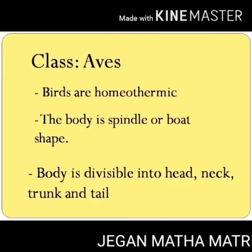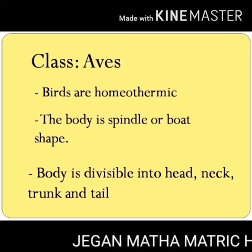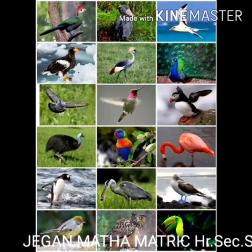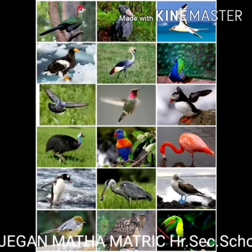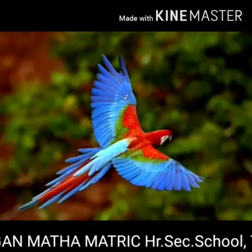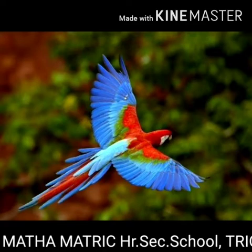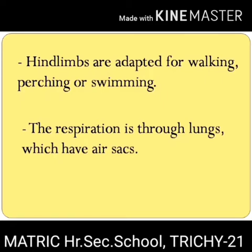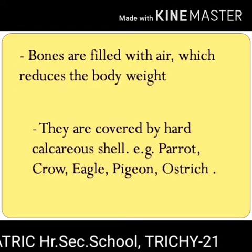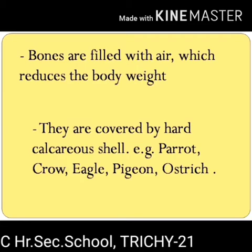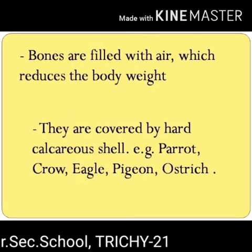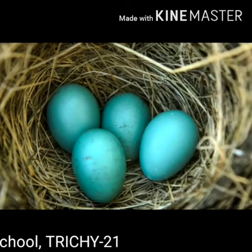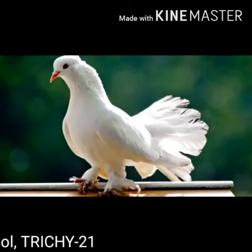Class Aves. Avis means birds. Birds are homeothermic, warm-blooded animals with several adaptations to fly. The spindle or boat-shaped body is divisible into head, neck, trunk, and tail. The body is covered with feathers. Four limbs are modified into wings for flight. Hind limbs are adapted for walking, perching, or swimming. Respiration is through lungs which have air sacs. Bones are filled with air, called pneumatic bones, which reduces bone weight. They lay large yolk-laden eggs covered by a hard calcareous shell. Examples: parrot, crow, pigeon, ostrich.